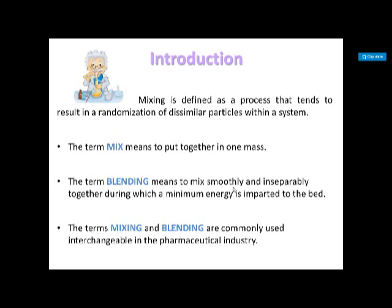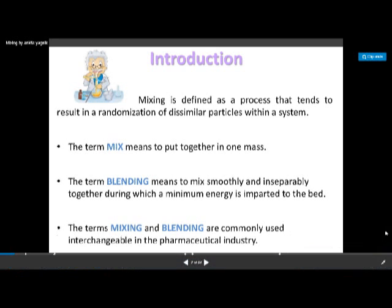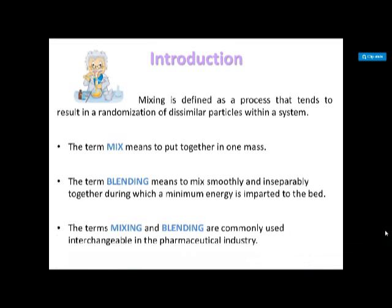There are basically three types of mixing: positive mixing, negative mixing, and neutral mixing. Positive mixing is a condition where the components of a system get spontaneously and completely mixed — for example, two miscible liquids mixing together is a positive type of mixing. Negative mixing requires continuous input of energy to keep the two phases of the system in a mixed condition.